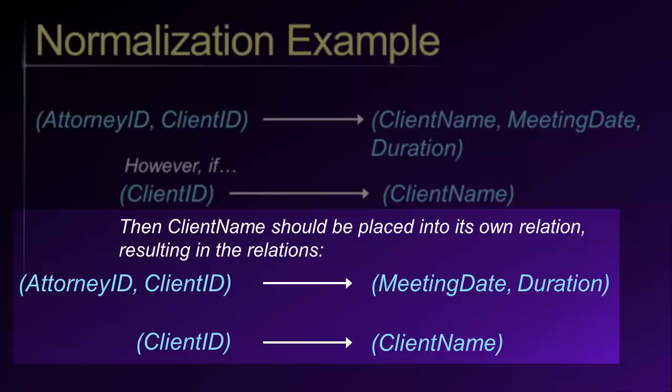Here's another example. Assume we need to record meetings between an attorney and one of the attorney's clients. To describe the meeting, we need to know the attorney's ID and the client's ID — together they can determine the client's name, the meeting date, and the duration of the meeting. However, if a client's ID can separately be used to determine the client's name, then the client's name should be removed from our original relation and placed into its own relation using client ID as the primary key. The result is a meeting table with attorney ID, client ID, meeting date, and duration; and a client table with client ID and client name, where client ID in the meeting table serves as a foreign key.